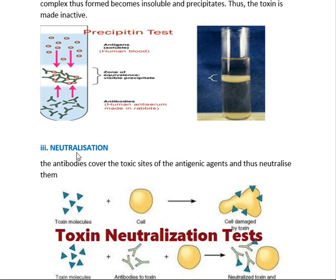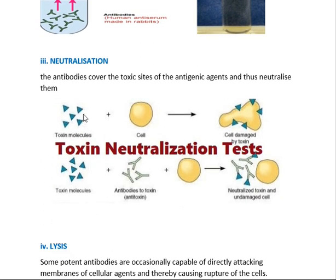Then neutralization — the name itself indicates the mechanism. The antibodies cover the toxic sites of the antigenic agents and neutralize them. Here the toxin molecules would normally attack and damage cells, but the antibodies cover all the sites of these toxin molecules so they cannot bind to the cell, and our cells are protected. The same thing happens with viral neutralization — antibodies block the sites of virus particles, preventing cell damage. This protective method is called neutralization.